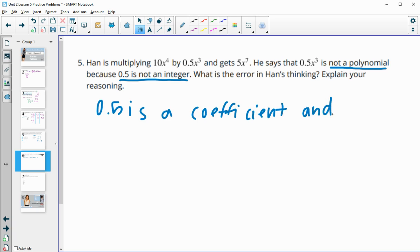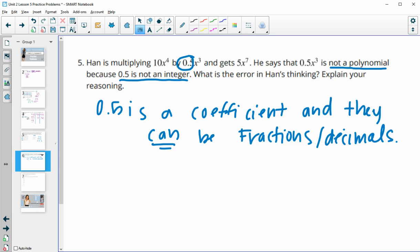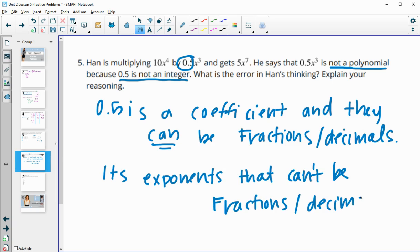And coefficients can be fractions or decimals. Fractions are just decimals. So that's completely fine that a number in front of the variable is a fraction. It's exponents that can't be fractions. So if that had happened to be in the actual exponent then we would have a problem. So if it was, you know, x to the 0.5, this would be a problem. But 0.5x is totally fine.